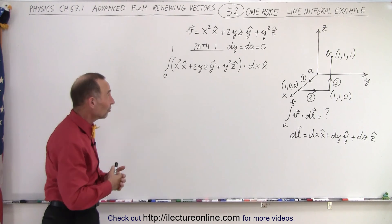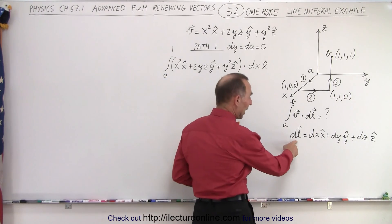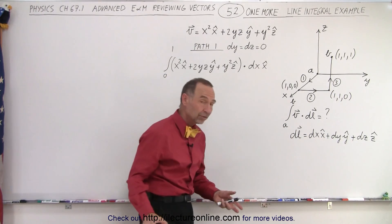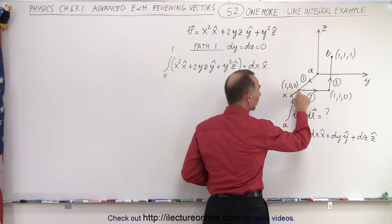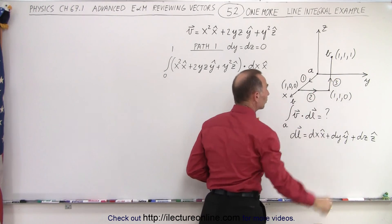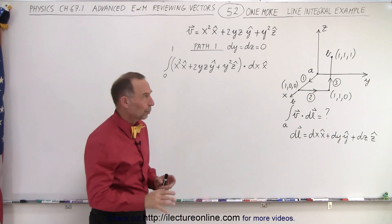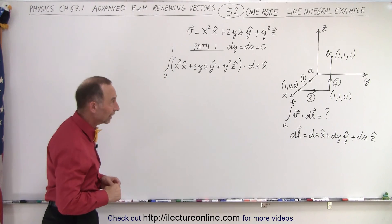Our vector has three dimensions to it, so now we have to make sure that when we travel on our path we take into account all three dimensions. But first we're going to travel along the path from the origin along the x-axis, then along the y-axis, then along the z-axis to the point (1,1,1). In the next video we'll try to do it directly from the origin to that point.